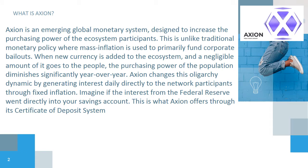Axion changes this oligarchy dynamic by generating interest daily directly to network participants through fixed inflation. Imagine if the interest from the Federal Reserve went directly into your savings account. This is what Axion offers through its certificate of deposit system.